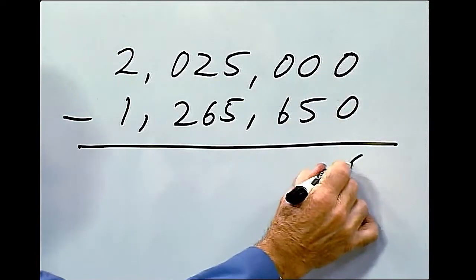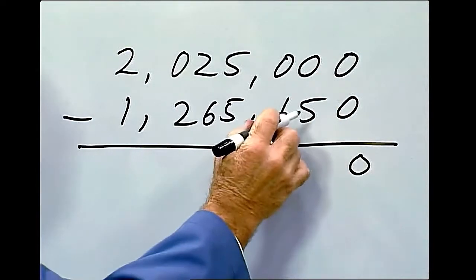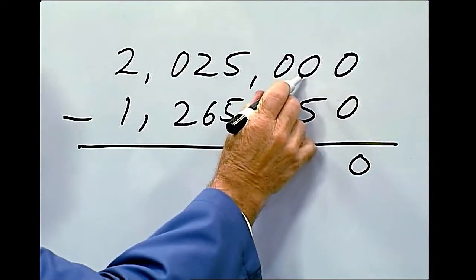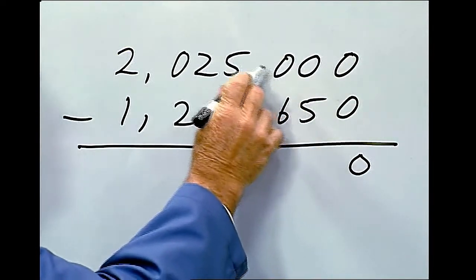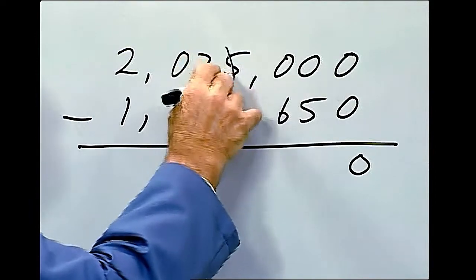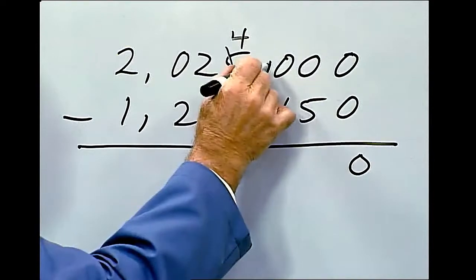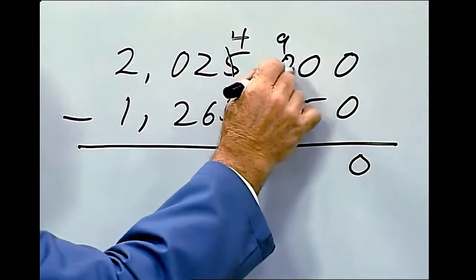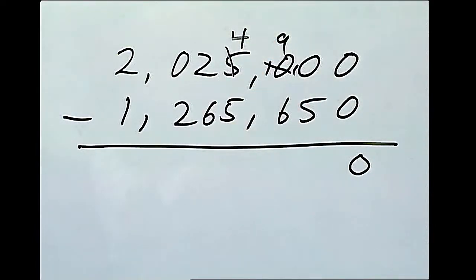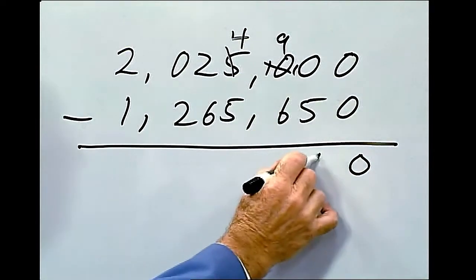Zero from zero is zero. We can't deduct 5 from zero, so we have to borrow from the next number. We can't do that, so we have to borrow 1 from the thousandths column. Now we can borrow from the hundredths column. Makes this a 9, and makes that a 10. So 10 minus 5 is 5.